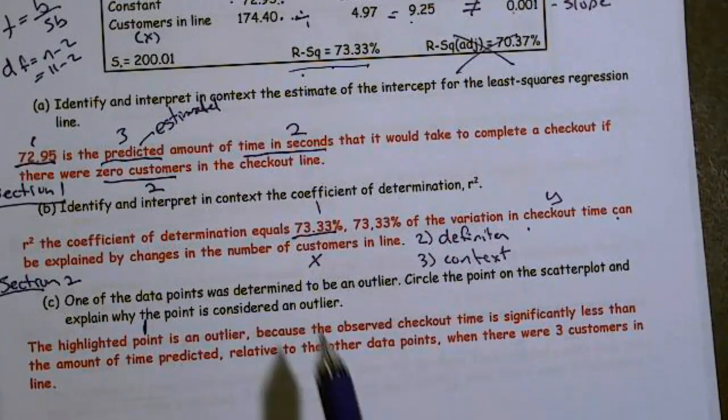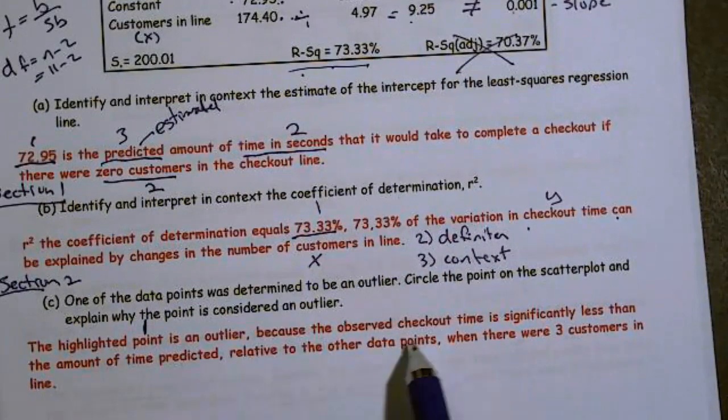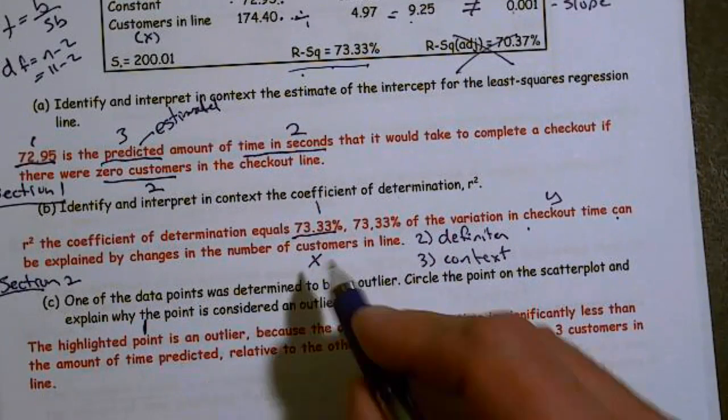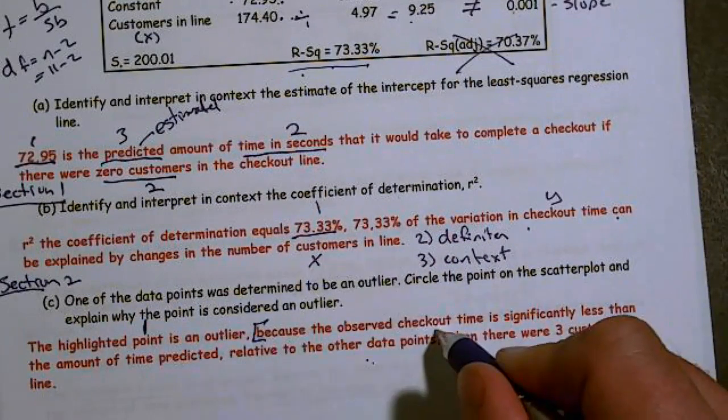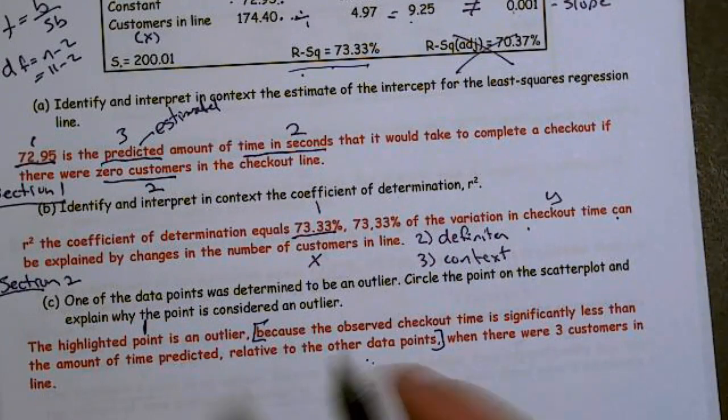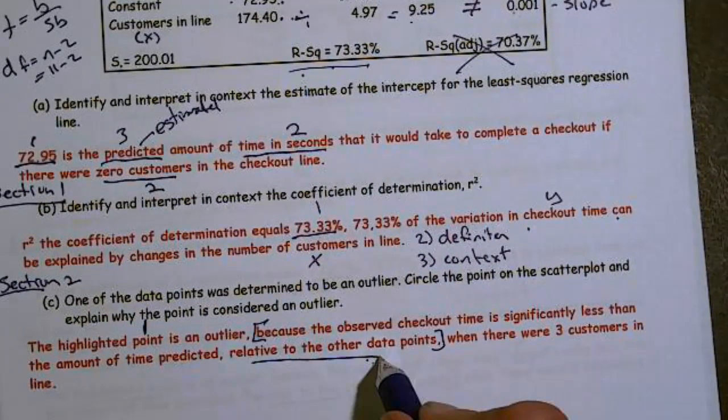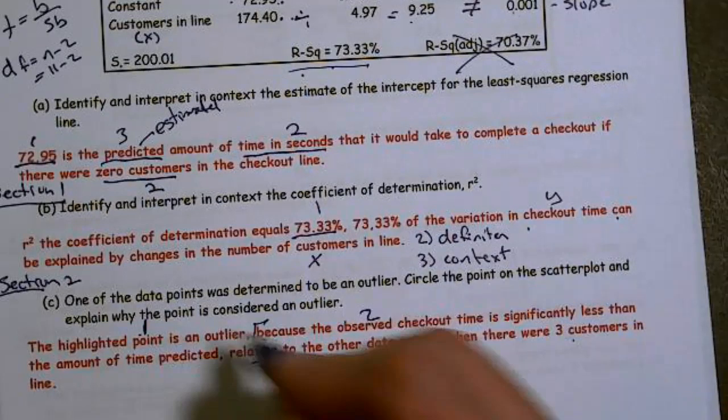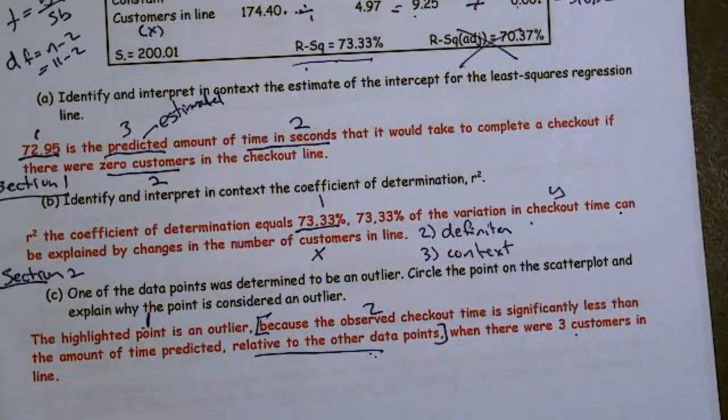Because the observed checkout time is significantly less than the amount of time predicted relative to the other data points. I needed to say something along those lines or because it had a large residual relative to the other data points. So make sure you include that, in the curve when there were three customers in line. But if I had this and that, that would give me full credit.